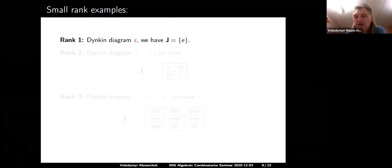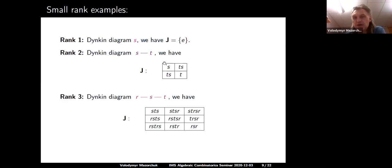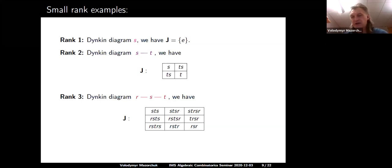Here are some examples. In rank 1, the penultimate cell is the identity, since after removing w₀ = s, just the identity remains. In rank 2, w₀ = stst, and the penultimate cell consists of {s, t, sts} — with left cells as columns and right cells as rows, giving two left cells and two right cells. In rank 3, the penultimate cell has three right cells and three left cells, all naturally indexed by simple reflections, as is clear directly from the picture.